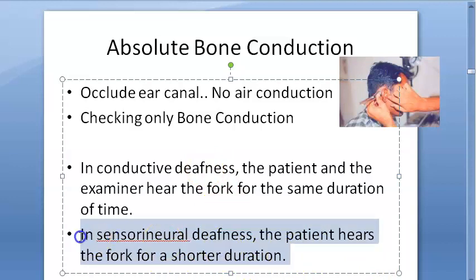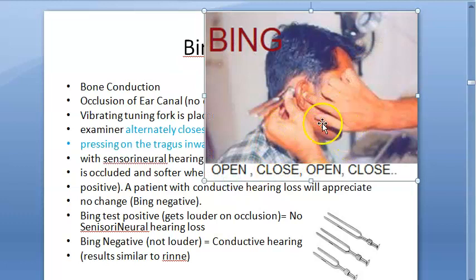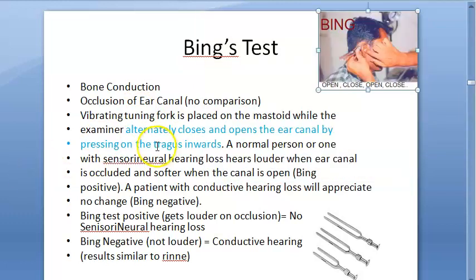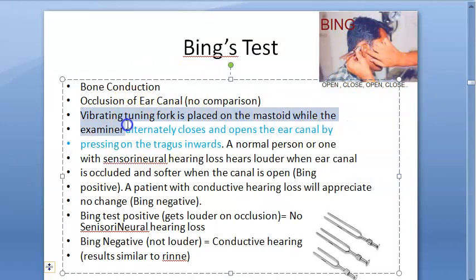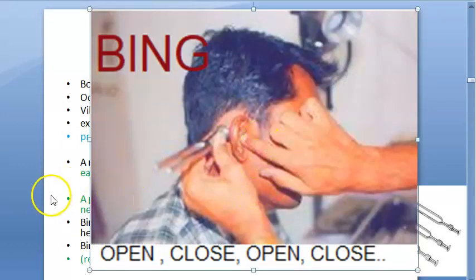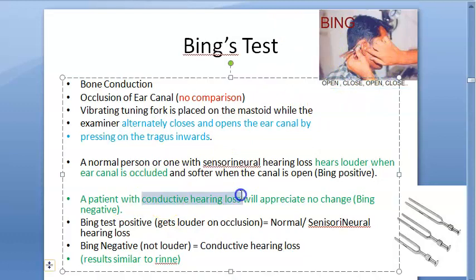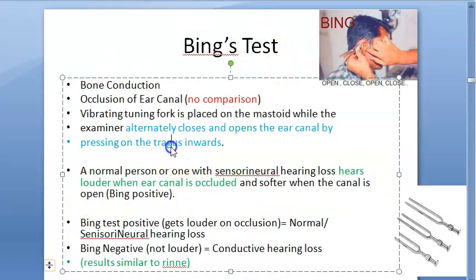In sensorineural deafness, the patient hears the fork for a shorter duration because the nerve is damaged. Bing's test involves alternately opening and closing the ear canal — occlusion is alternated. The vibrating tuning fork is placed on the mastoid while the examiner alternately closes and opens the ear canal by pressing the tragus. In conductive hearing loss, occluding or opening the canal makes no difference, so there will be no change — indicating a negative Bing's test.